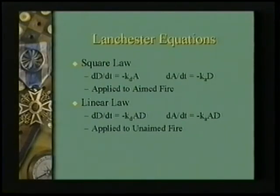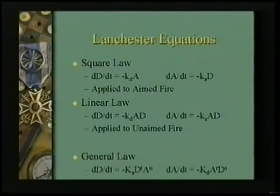He also described the Linear Law. The Linear Law says that the attrition against the defender is proportional to the strength of the attacker and the strength of the defender together, again multiplied times a coefficient of effectiveness. This is applied to unaimed fire, where you don't see what you're shooting at — you're throwing artillery shells over the hill, for example. The number of shells going over is part of the equation, and the number of targets it's landing on is the other part. These are very generic differential equations, and their genericness is what's kept them alive from 1912 to 1999. There's even a general form of the law, throwing in a couple more coefficients where a value could be 0 or 1.